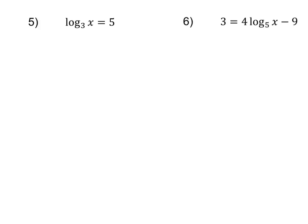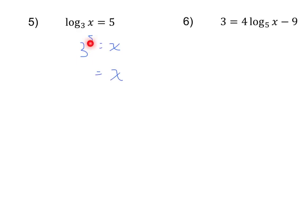Now we're going to look at some equations that start off with a log. Slightly different, but you still want to think about your logarithms the same way. Our logarithm is equal to 5. That means this 5 is the exponent that I need to raise my base of 3 to to get x. In other words, 3 to the 5th power equals x. And 3 to the 5th power is 243, so x equals 243.